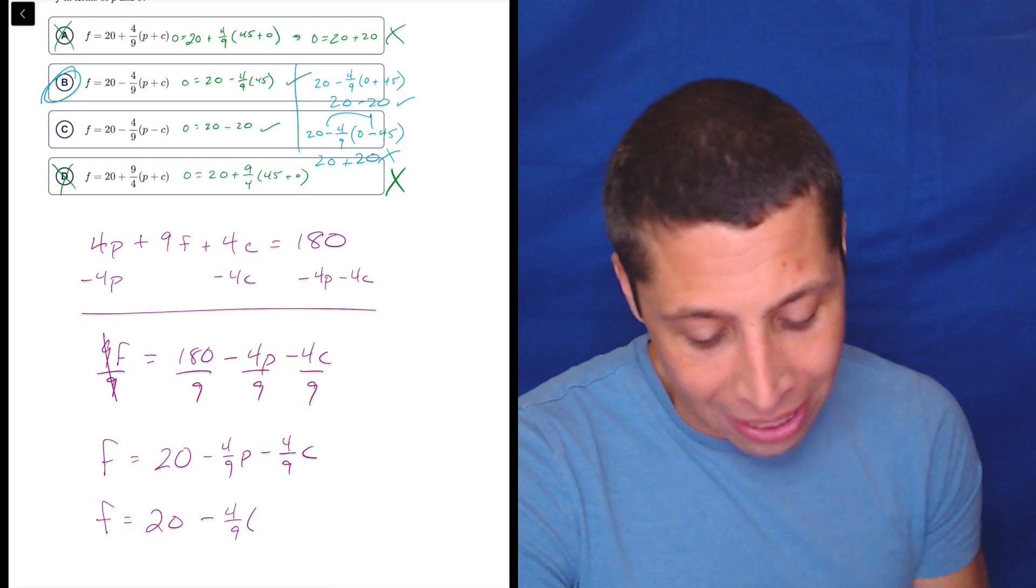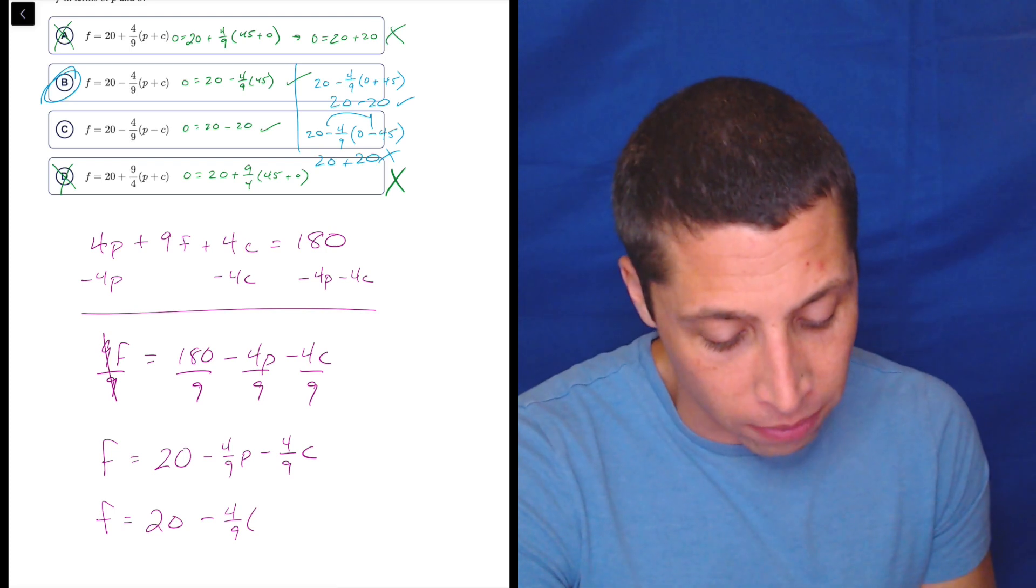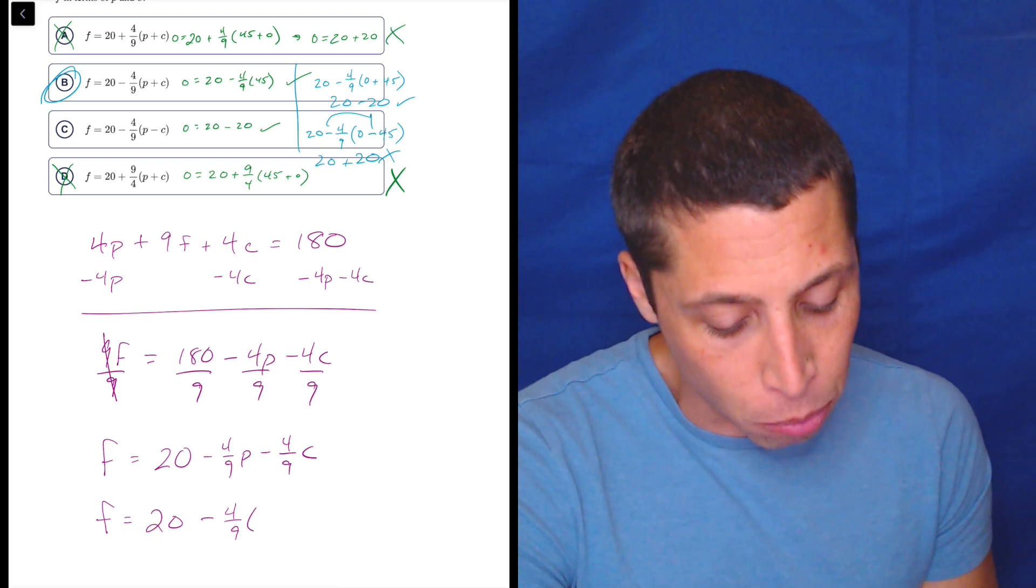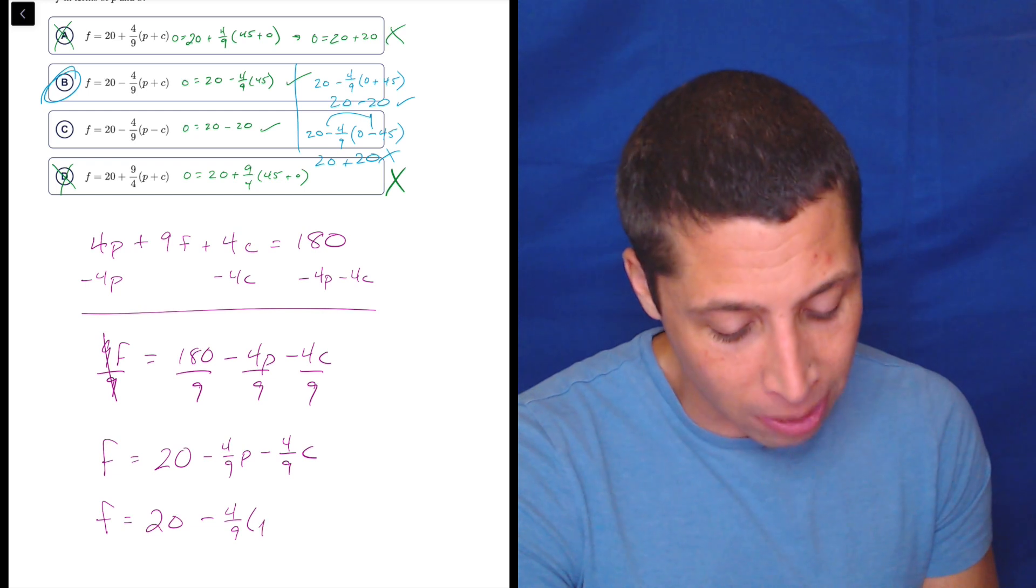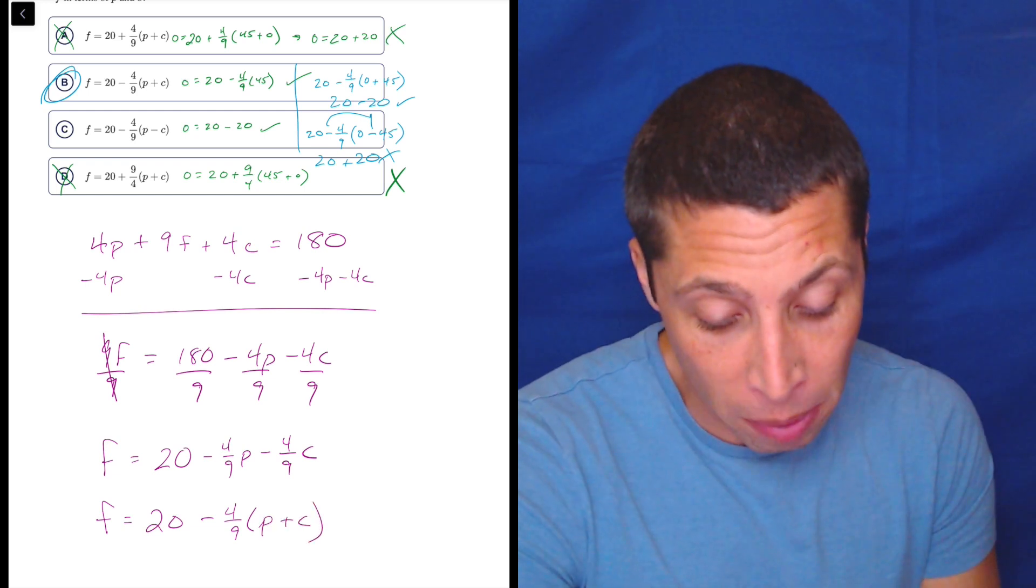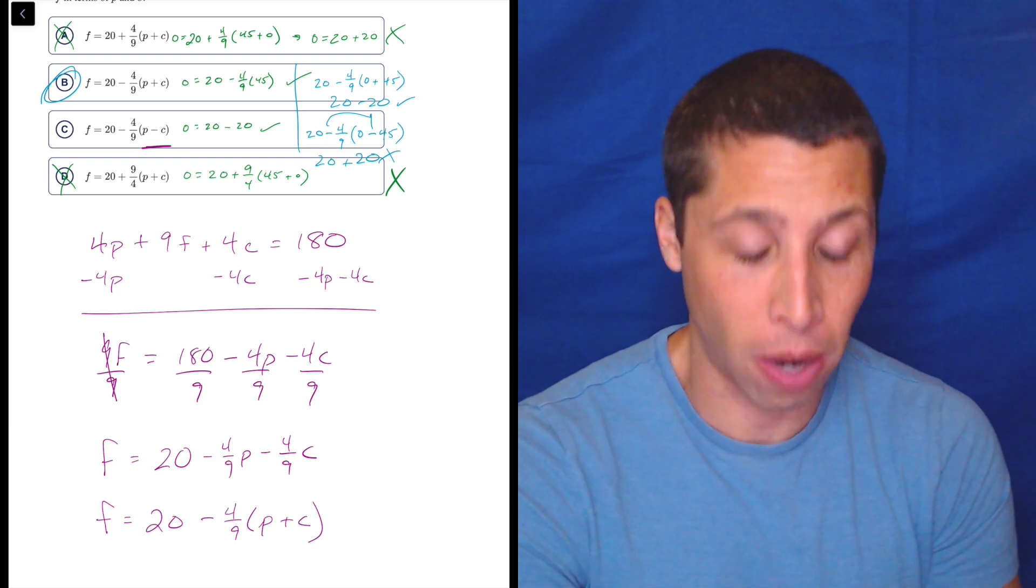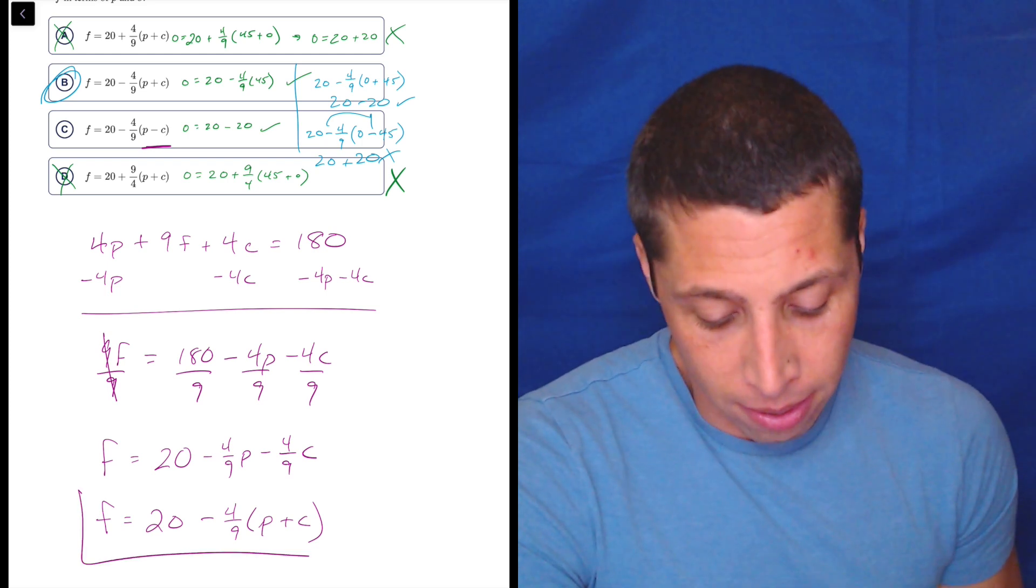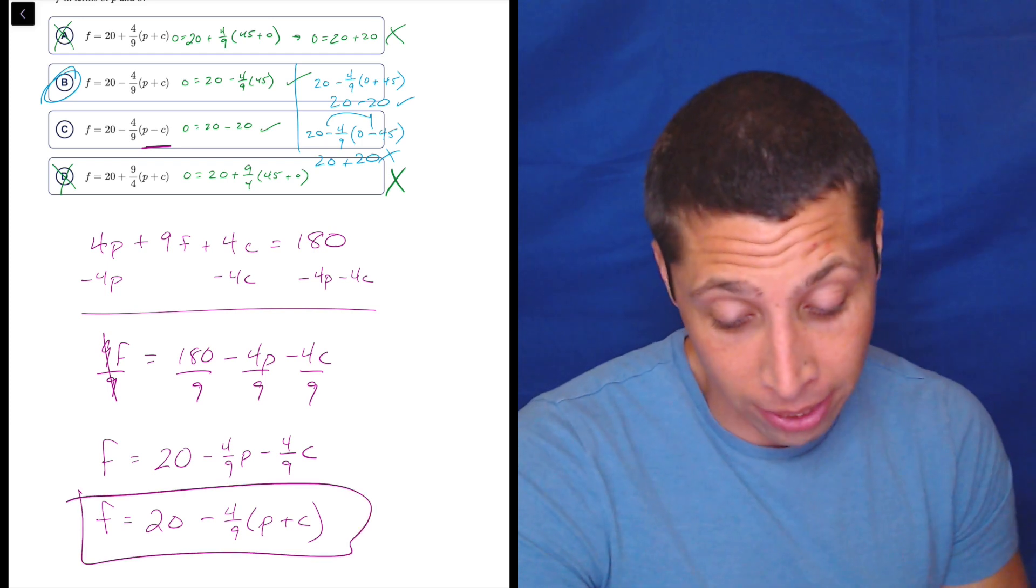So to make this look like this, we should factor out four ninths. And this is where we could still mess up. Even if we understood this very, very confidently, if we factor out negative four ninths, it's going to become P plus C, right? Not P minus C. But if we thought it was P minus C, that's where choice C would come from. And so that's it. That's choice B, right? It's the same thing.